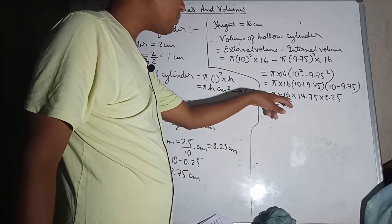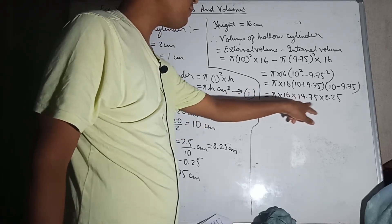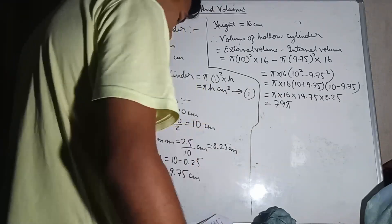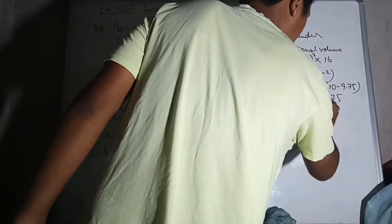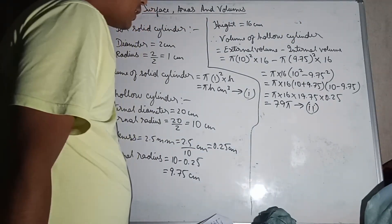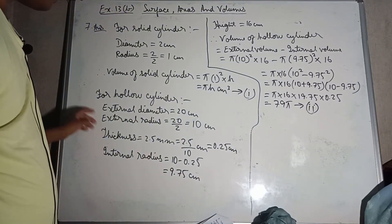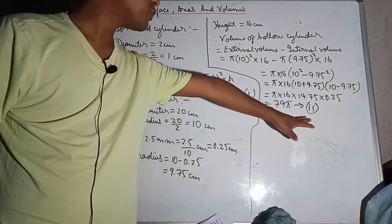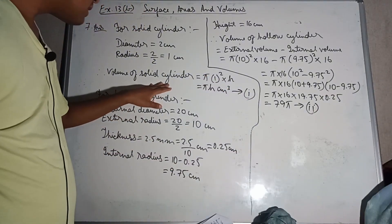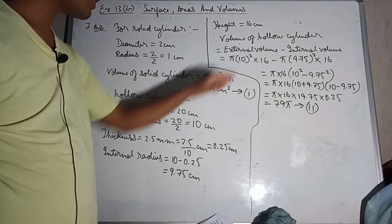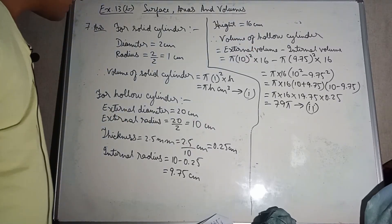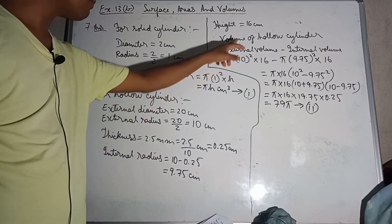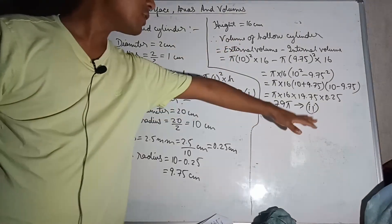So the volume of the hollow cylinder equals π into 16 into 19.75 into 0.25, which equals 79π. This is equation 2. The volume of the solid cylinder is equation 1. Setting volume 1 equal to equation 2.